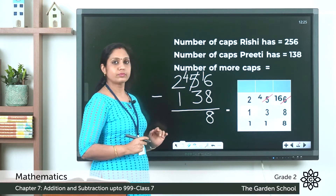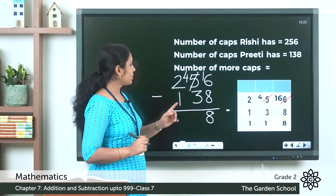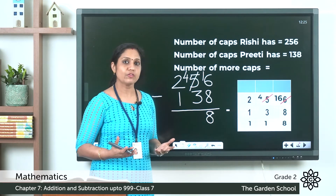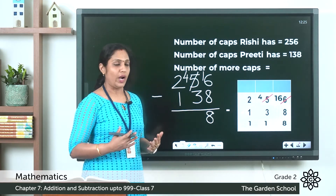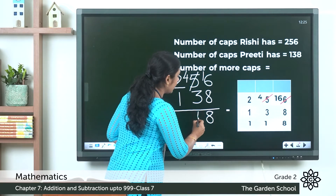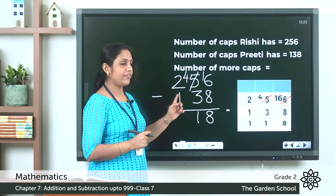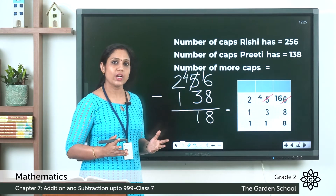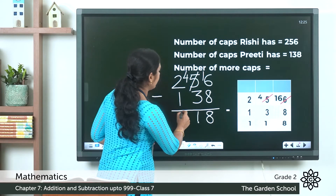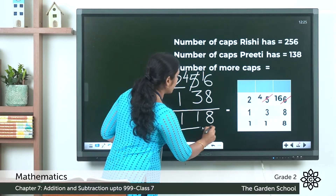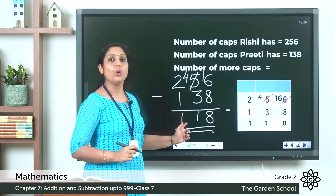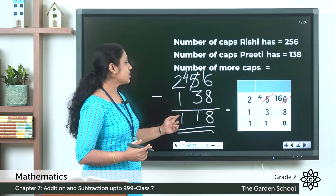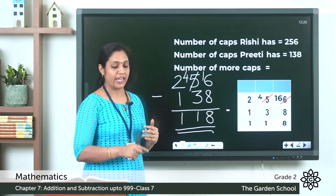Now we move on to the tens place. We have 4 minus 3, which is 1. Write that in the tens place. Now we move on to the hundreds place. We have 2 minus 1, which is 1. So the answer is 118. Rishi has 118 more party caps than Preeti.